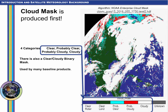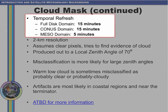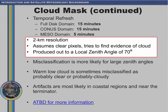The cloud mask is first in the production suite. There are four categories as listed at the bottom: clear, probably clear, probably cloudy, and cloudy. There's also a binary clear-cloudy mask. The cloud mask is computed every 15 minutes for both full disk and CONUS domains, and it's computed every 5 minutes for mesodomains.